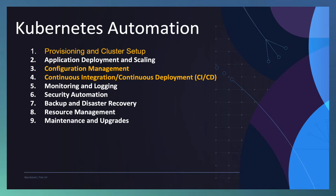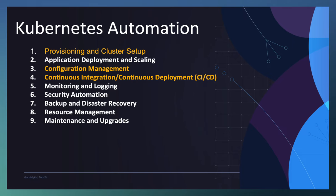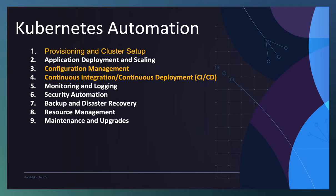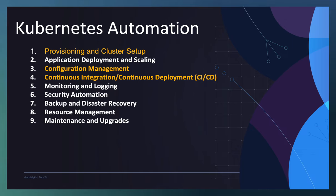Monitoring and logging — you can use Prometheus or any of the monitoring systems for monitoring the Kubernetes cluster and logging the information. The entire steps can be automated altogether. There are various aspects of Kubernetes automation, and today's video we are looking at three main areas: how to provision the cluster and configure it, second is the configuration management using external tools, and the CI/CD — how we can take the help of Copilot to automate all these aspects. That's the scope of today's session.